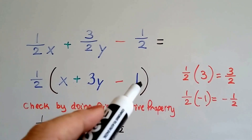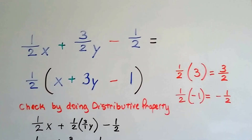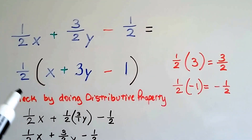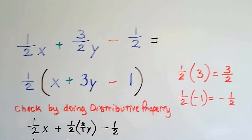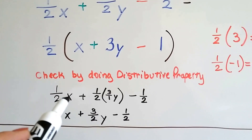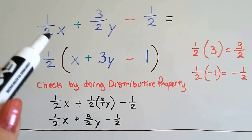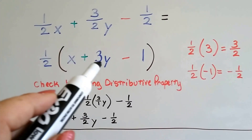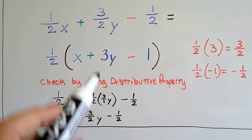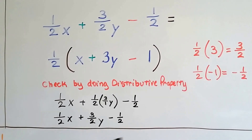A half times a negative one is going to get us this negative half. Half times negative one is a negative half, and it got us right back up to the original. We check by doing the distributive property: a half times x is half x, plus that half times three — if we put it over a one, we get three over two y, just like up there. And we get our minus half.